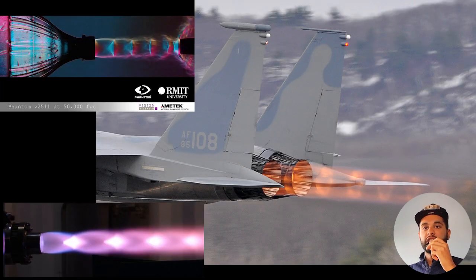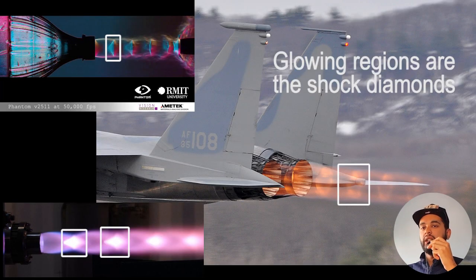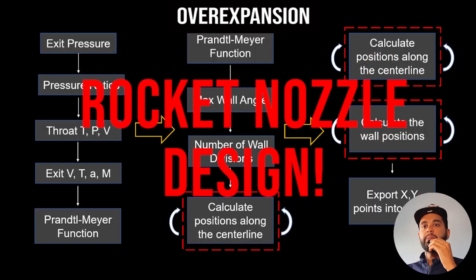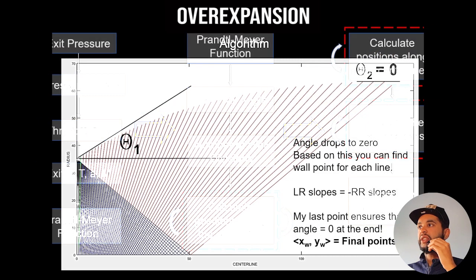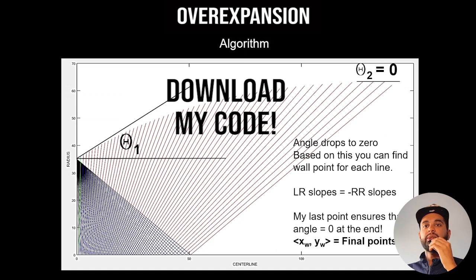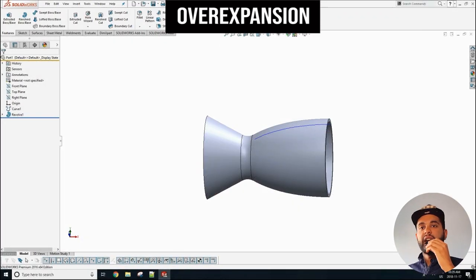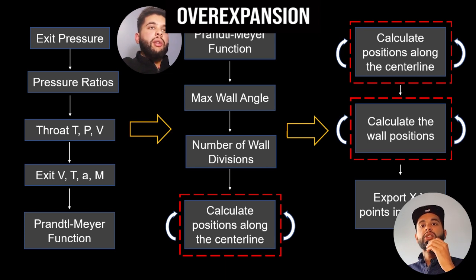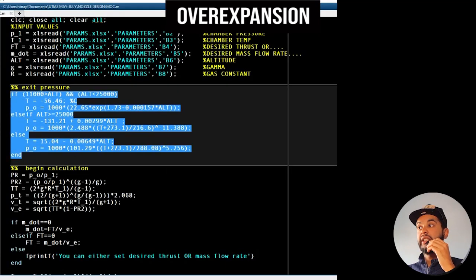You can see in these pictures what the shock diamonds look like — they're also called Mach diamonds. So you can see how in over-expansion the flow is very complicated, with a lot of shockwaves and expansion fans, all functioning to try and maintain equilibrium and get the pressure equal to the back pressure. This is why nozzle sizing and the method of characteristics are very important, and I have many videos on my channel which cover these in detail.